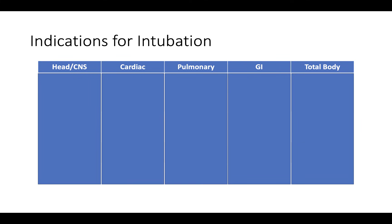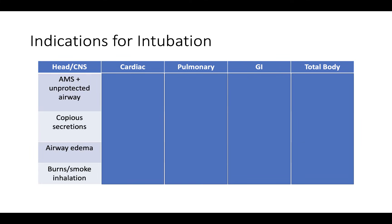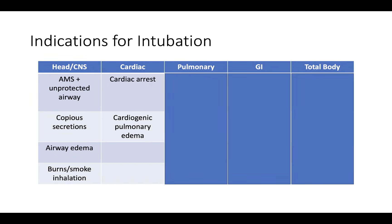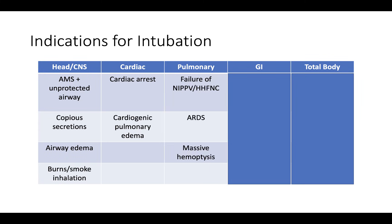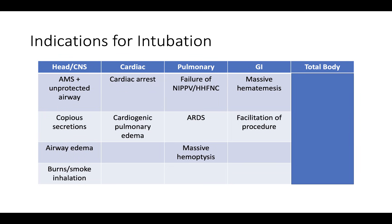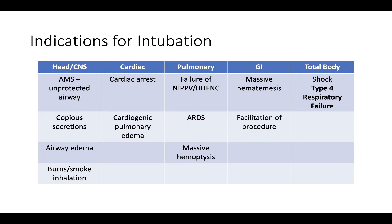It is easiest to think about indications for intubation in a head-to-toe fashion. For the head and CNS: altered mental status, unprotected airway, copious secretions, airway edema, and burns or smoke inhalation. Cardiac indications include cardiac arrest and cardiogenic pulmonary edema that has failed non-invasive. Pulmonary indications include failure of NIPPV or heated high-flow nasal cannula, ARDS, and massive hemoptysis. GI indications include massive hematemesis or facilitation of a procedure like an EGD. Total body indications include shock, which represents type 4 respiratory failure. While in shock, a patient's respiratory system cannot meet the metabolic demands of the body; controlling ventilation allows improved management of metabolic acidosis and minimizes the work of the respiratory musculature, decreasing the proportion of cardiac output consumed.